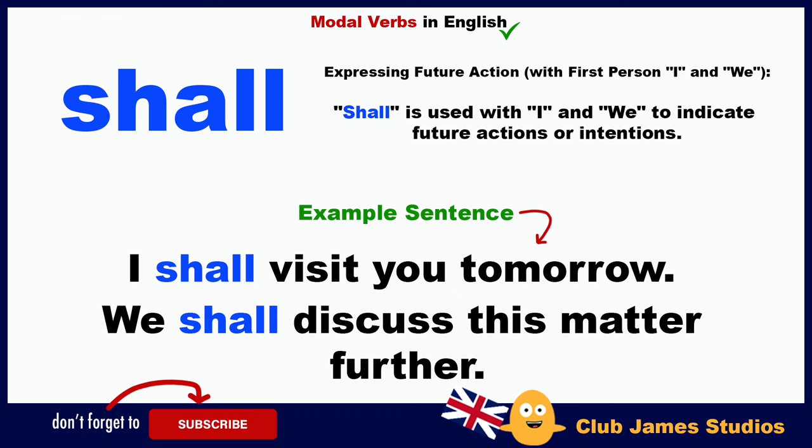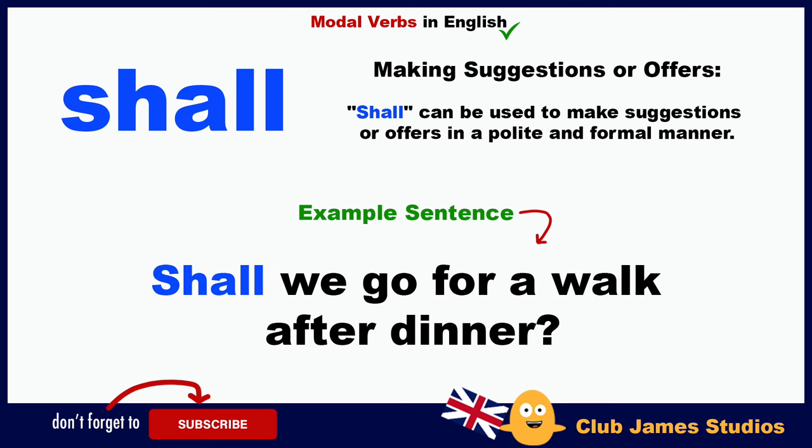Expressing future action with first person I and we: 'shall' is used with I and we to indicate future actions or intentions. Example: I shall visit you tomorrow; we shall discuss this matter further. Making suggestions or offers: 'shall' can be used to make suggestions or offers in a polite and formal manner. Example: shall we go for a walk after dinner?